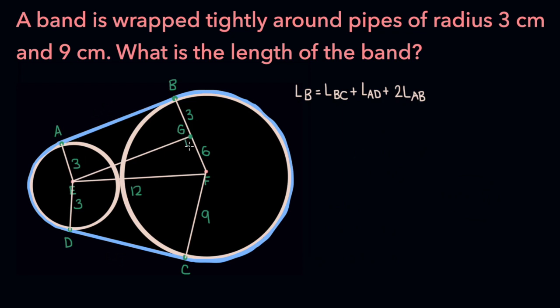Notice that we form the right triangle GEF. This triangle has GE as one of its legs. We know its other leg is of length 6, and its hypotenuse is of length 12. So we can just use the Pythagorean theorem to find the length of GE.